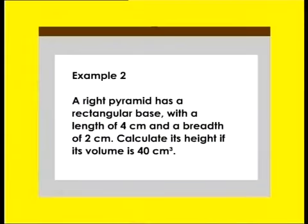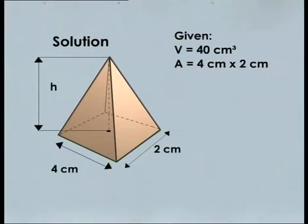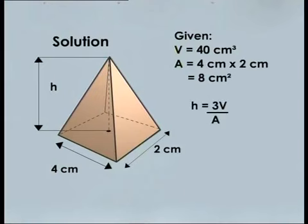Example 2: A right pyramid has a rectangular base with a length of 4 centimeters and a breadth of 2 centimeters. Calculate its height if its volume is 40 cubic centimeters. Solution: Given V = 40 cm³, A = 4 × 2 = 8 cm². H = 3V/A = (3 × 40)/8 = 15 centimeters.